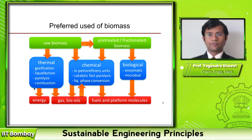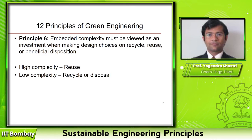From a green engineering perspective, biological treatment is desirable because all the effort that nature has put into making complex biomass is preserved. In the thermal treatment route, all those efforts are wasted. The recommendation from the principle is that if you have a material with high complexity, always look for opportunities to reuse it as much as possible. If you have a material with low complexity and reuse is not possible, it is acceptable to recycle or dispose of it. Whenever dealing with waste material, ask: does it have embedded complexity? If yes, look for reuse opportunities — perhaps not for the whole product but for individual components.